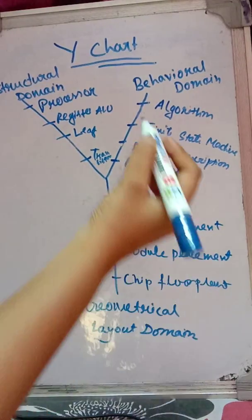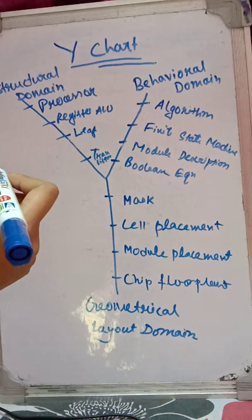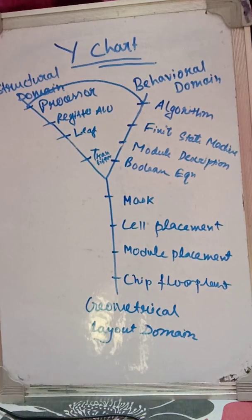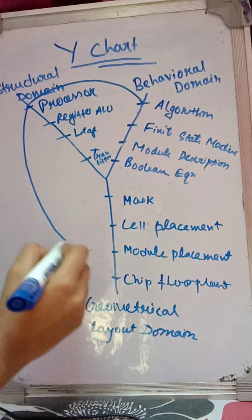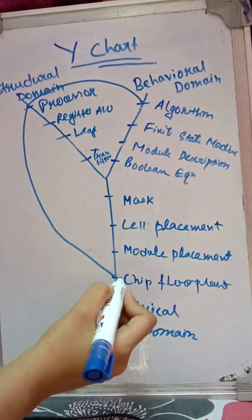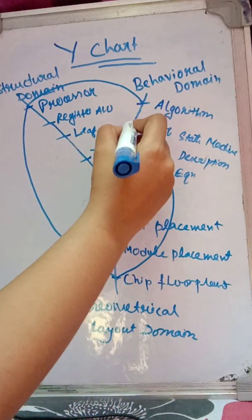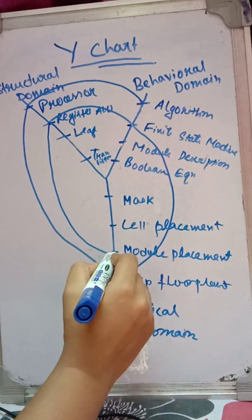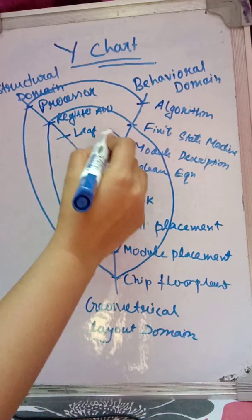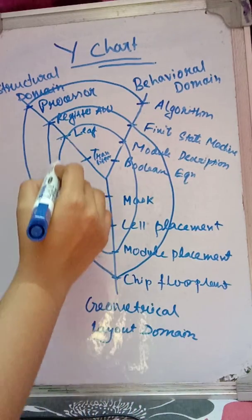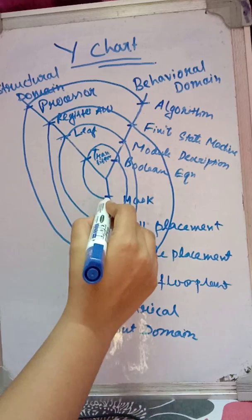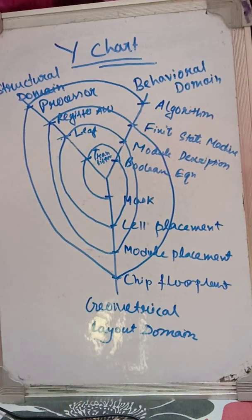Now, the key is how to connect them. Starting with Algorithm from the behavioral domain, it connects to Processor, then to Chip Floor Plan. From Chip Floor Plan we go to Finite State Machine, then to Register, then to Module Placement, then to Module Description, then to Leaf, then to Cell Placement, then to Boolean Equation, then to Transistor, and finally to Mask.